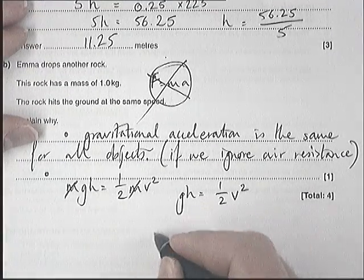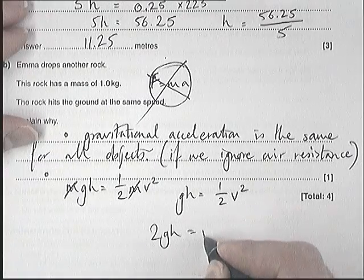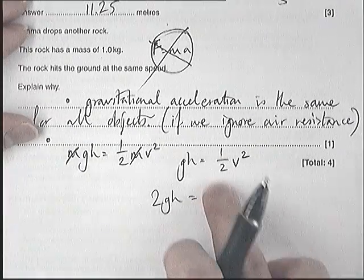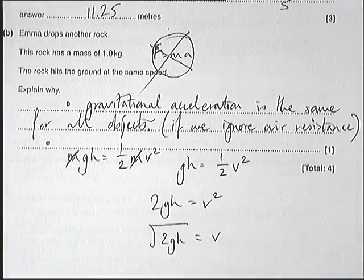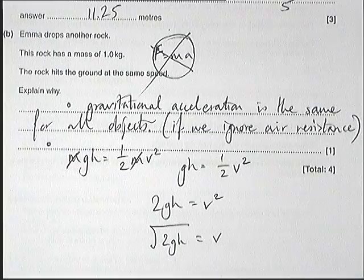Just quickly then, just for fun. That obviously becomes 2gh equals v squared, and then the inverse of squared is root 2gh equals v. Nice little bit of algebra that you might need to do in a similar type of question.